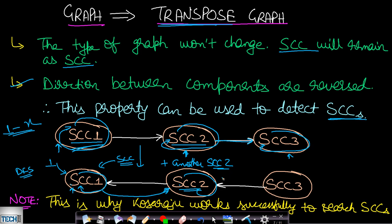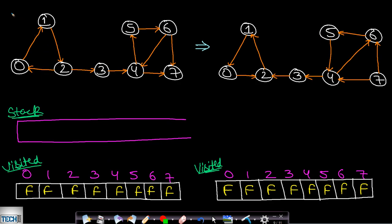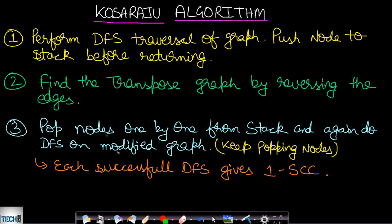This is the reason why the Kosaraju algorithm works — I will explain further reasoning after the dry run. Let us now look at the algorithm. The first step is to perform a DFS traversal of the graph and push nodes onto a stack when returning from them.